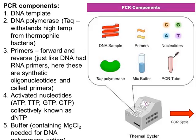We use forward and reverse primers, which are DNA — not RNA — and they are complementary to the DNA template at the region we want to amplify. We also need activated nucleotides: A, T, G, and C — in their tri-phosphate form to activate them for DNA polymerase to use.